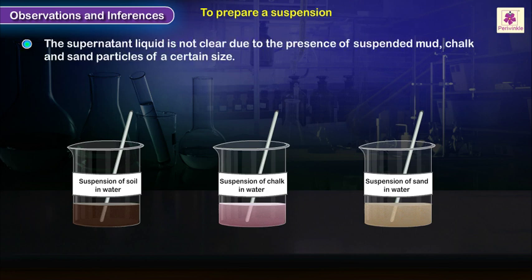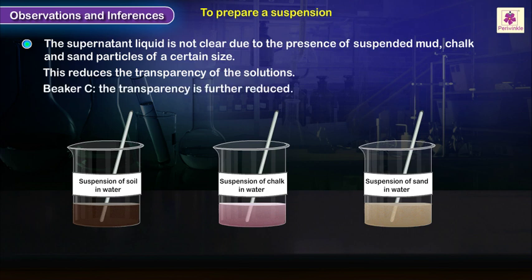The supernatant liquid is not clear due to the presence of suspended mud, chalk, and sand particles of a certain size. This reduces the transparency of the solutions. In beaker C, the transparency is further reduced due to the presence of very tiny sand particles suspended in water.